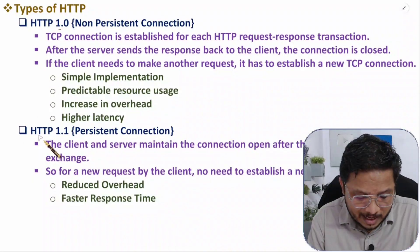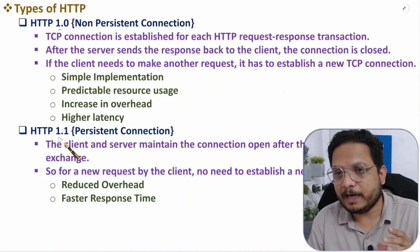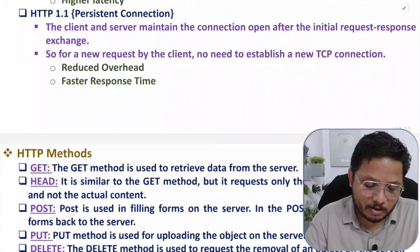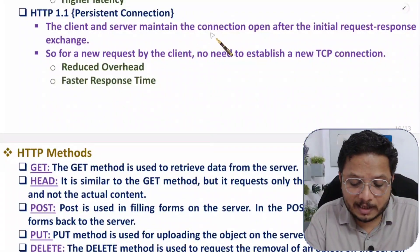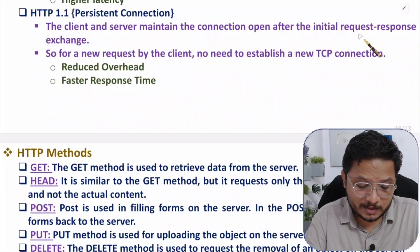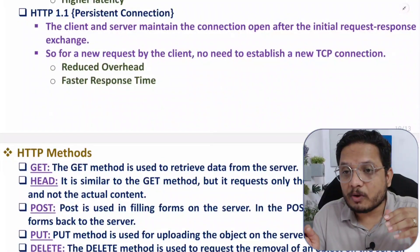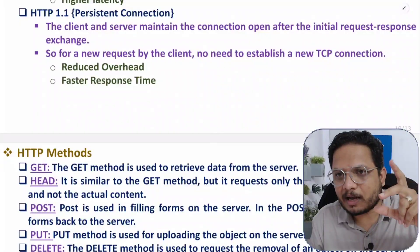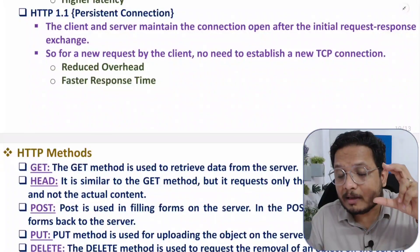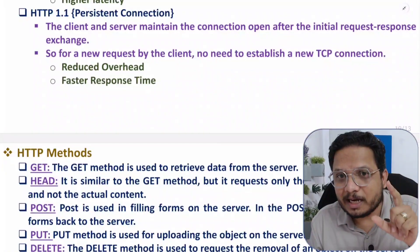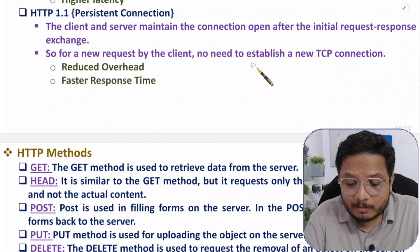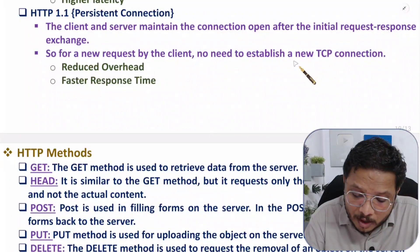In 2023 we use HTTP 1.1, which features persistent connection. The client and server maintain the connection open after the initial request-response exchange — there is no connection close. Initially a connection is established, request-response exchange happens, but after that the connection remains open. For a new request, no new TCP connection is needed.